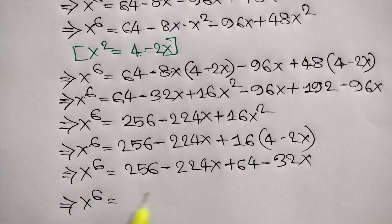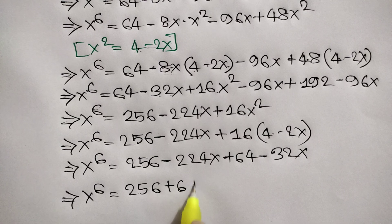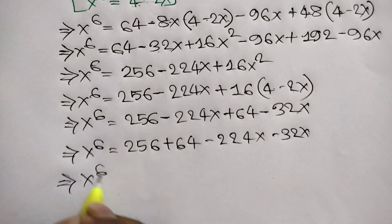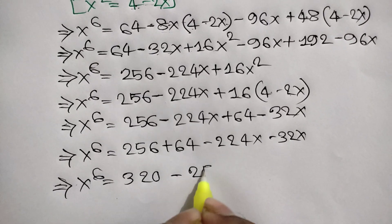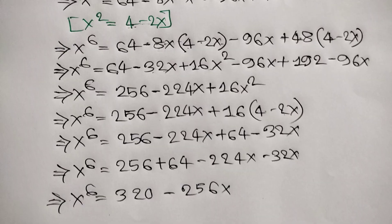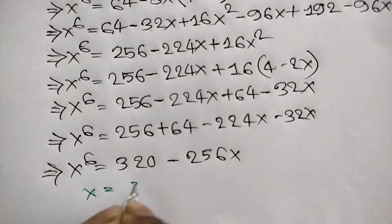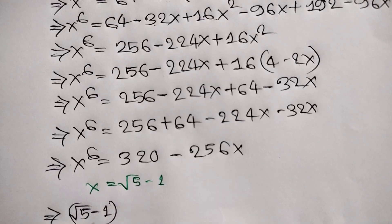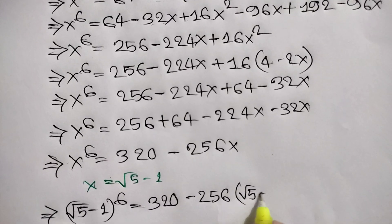Rearranging: x to the power 6 equals 256 plus 64 minus 224x minus 32x, giving us 320 minus 256x. Remember x equals square root of 5 minus 1, so substituting: square root of 5 minus 1 to the power 6 equals 320 minus 256 times (square root of 5 minus 1).